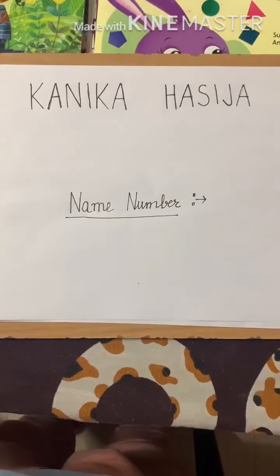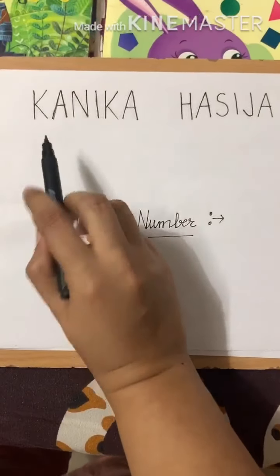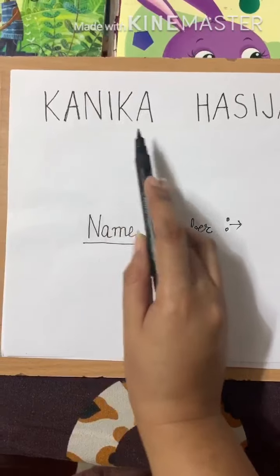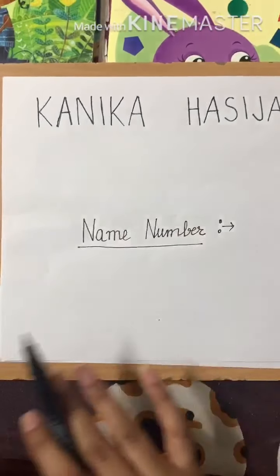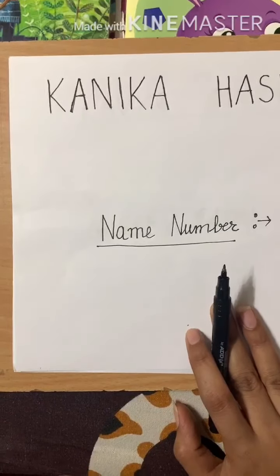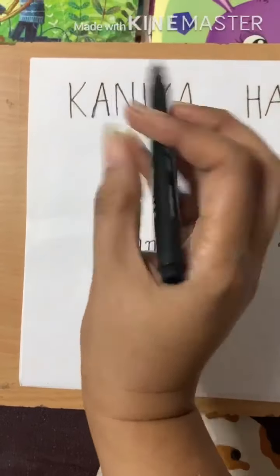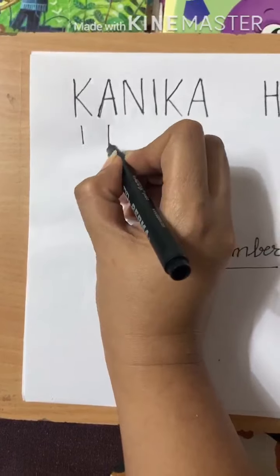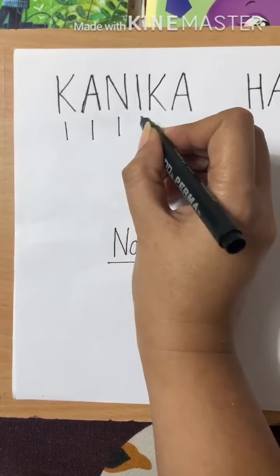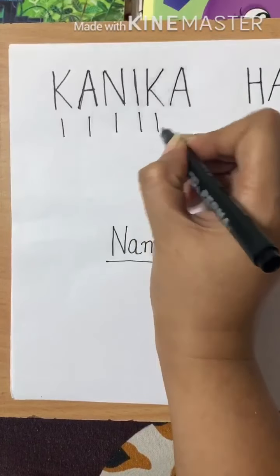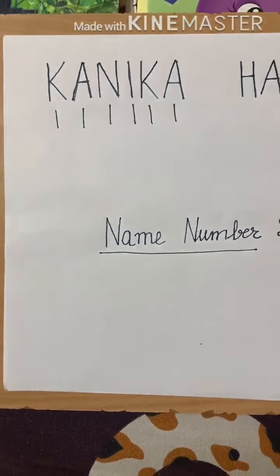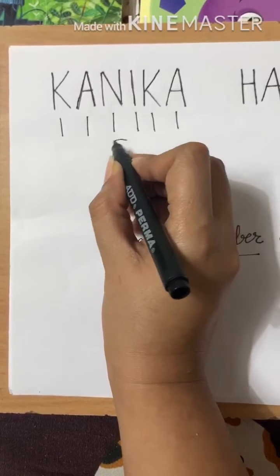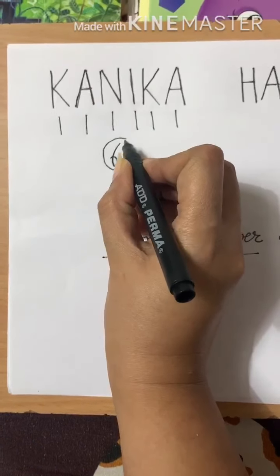It's very easy. As you can see, I have written my name Kaneeka. The first initial of my name is Kaneeka. Let's count how many alphabets — letters — I have written here. I will be drawing lines for them: 1, 2, 3, 4, 5, and 6. So here I have 6 letters in my first name, so I am writing 6 here.